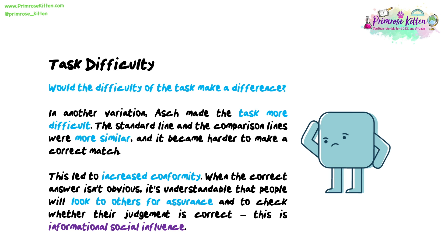Task difficulty. Would the difficulty of the task make a difference? In another variation, Asch made the task more difficult. The standard line and the comparison lines were more similar and became harder to match correctly. This led to increased conformity. When the correct answer isn't obvious, it's understandable that people will look to others for assurance and to check whether their judgment is correct. This is informational social influence.